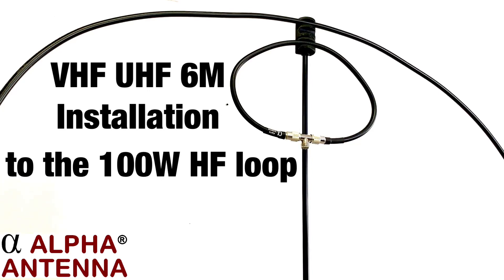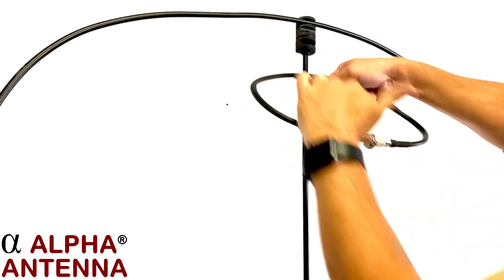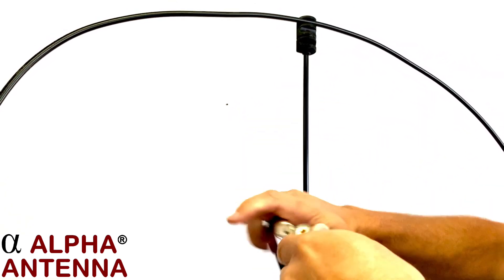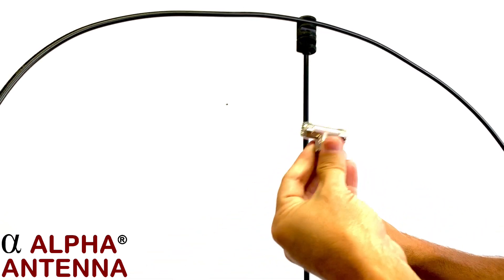Here is how to install the optional VHF UHF 6 meter element. Remove the center conductor from the 100 watt HF magnetic loop antenna. Take the T connector off of the inner loop.